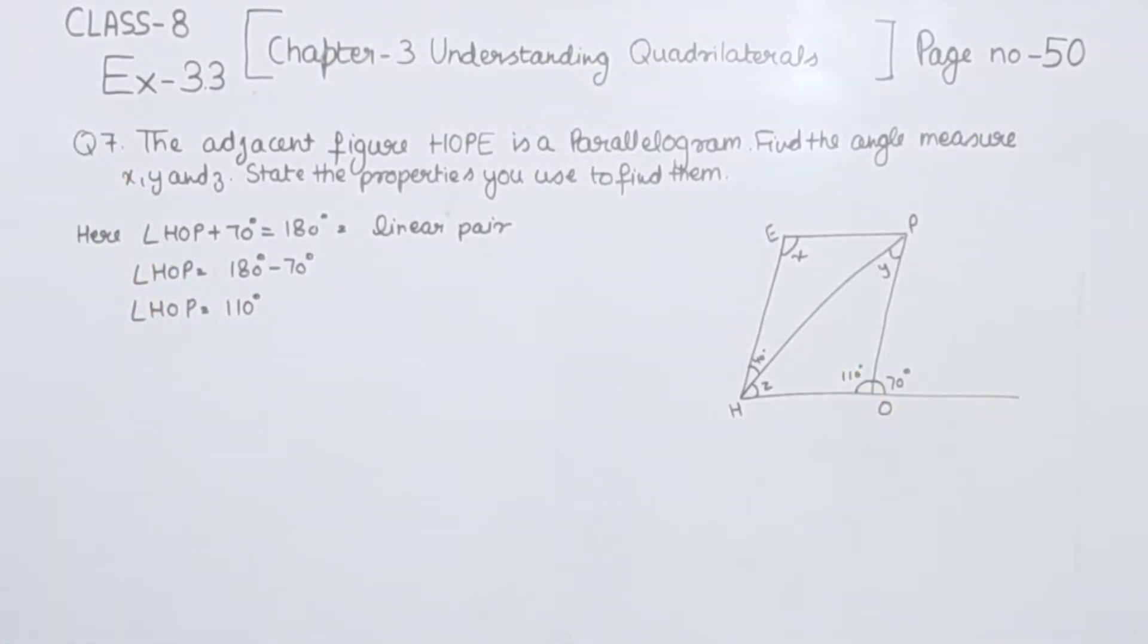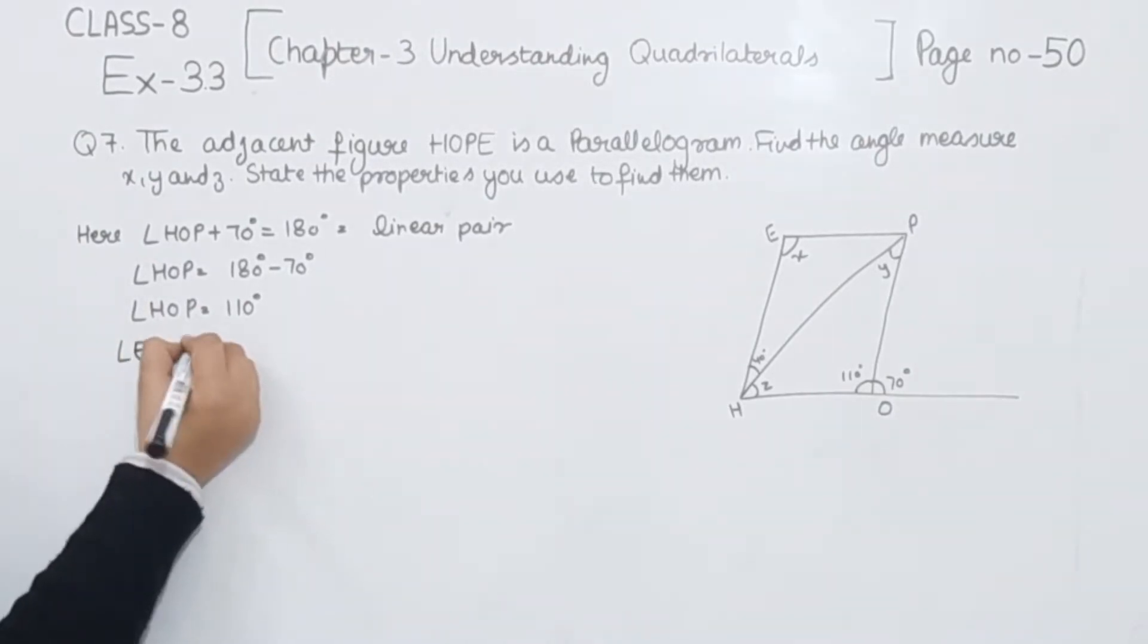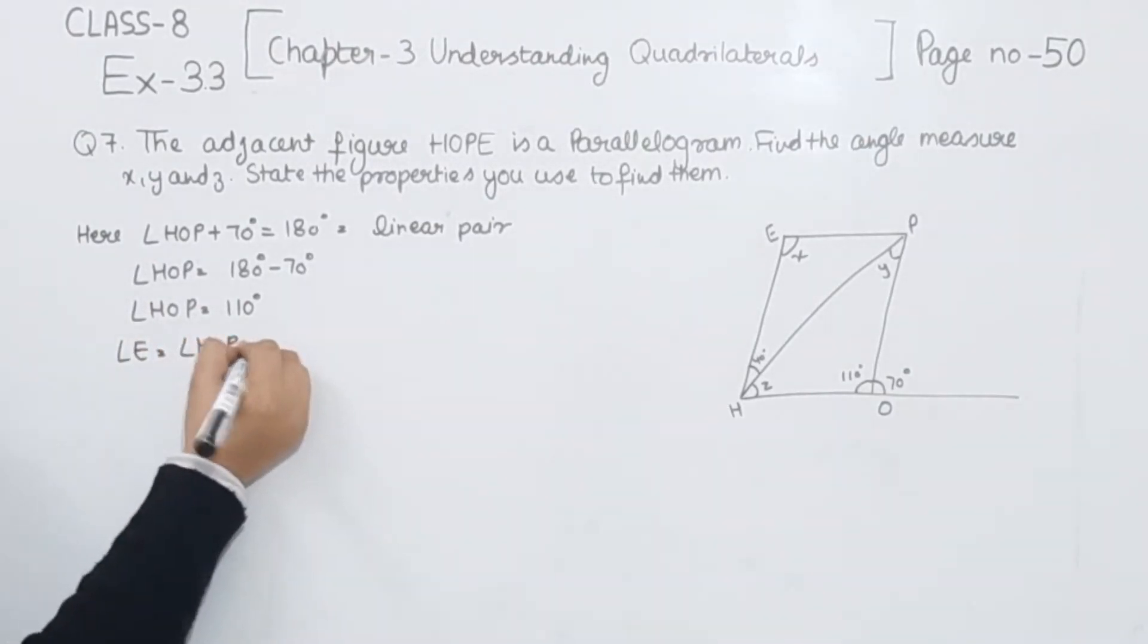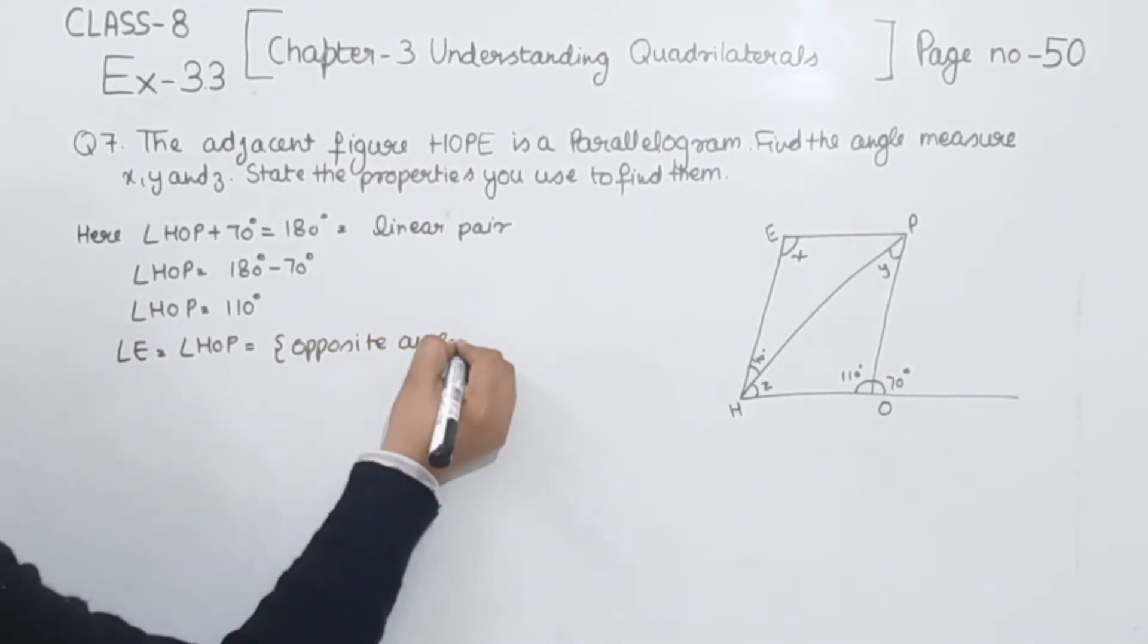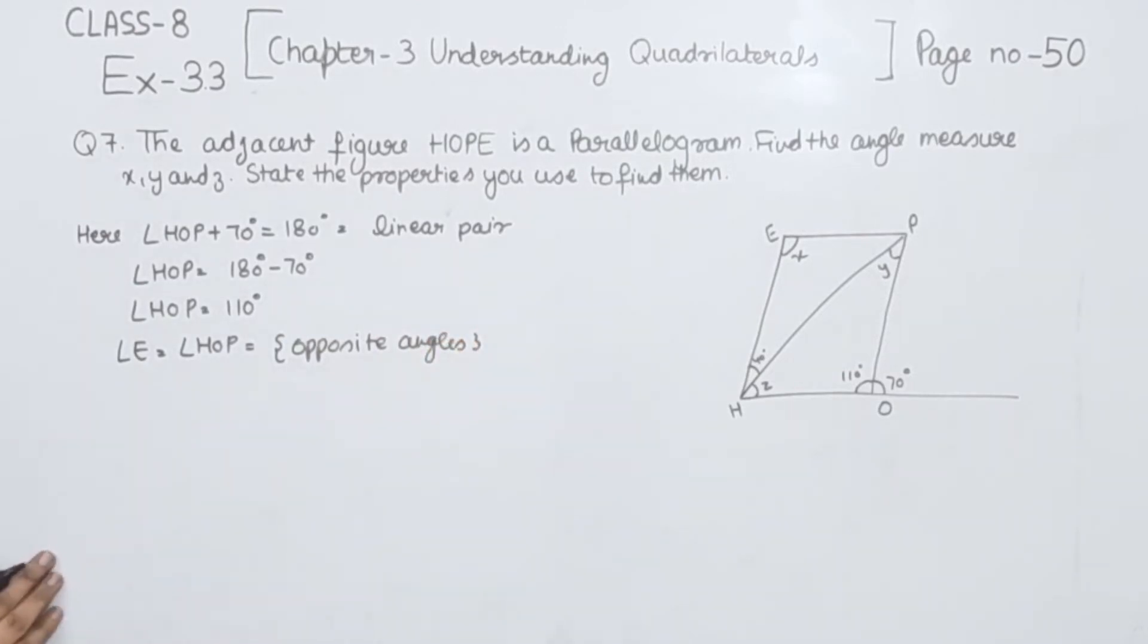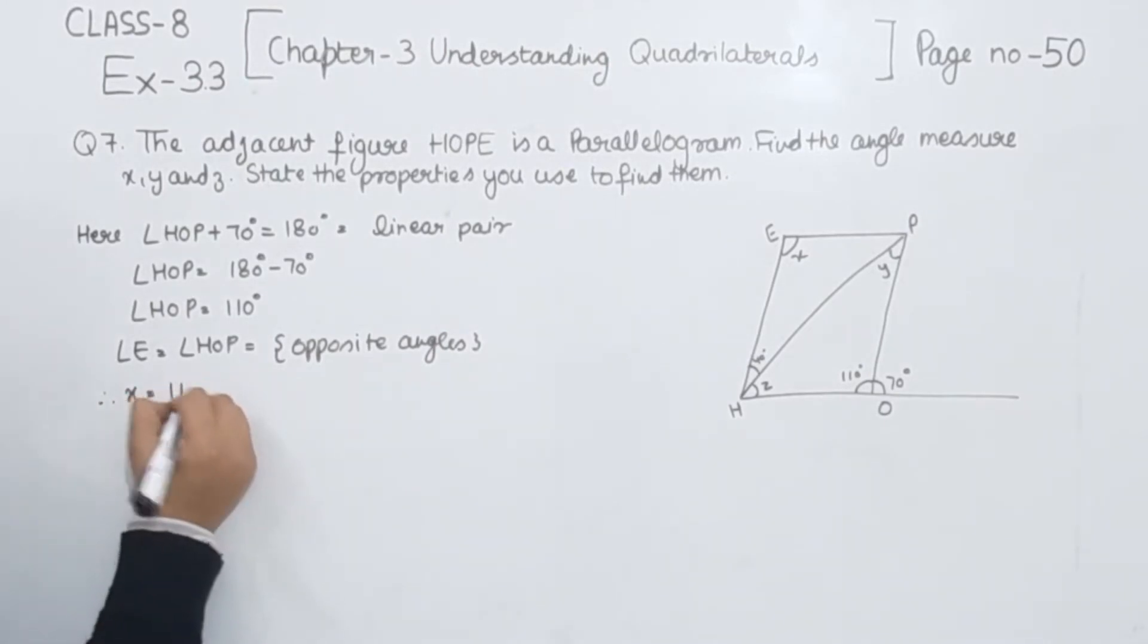Now angle E is equal to angle HOP. Why? Because they are opposite angles. Opposite angles of the parallelogram are equal. So that is the value of X we are having as 110 degrees.